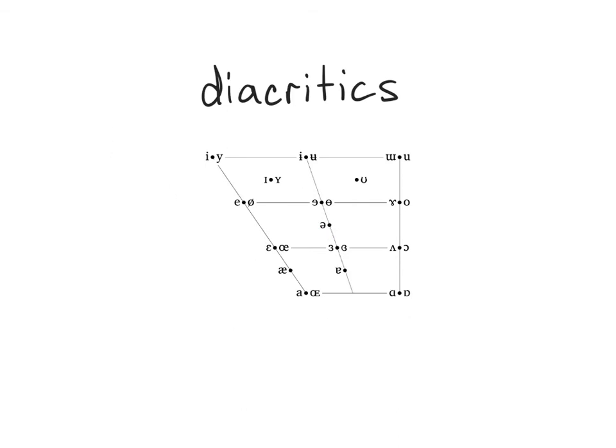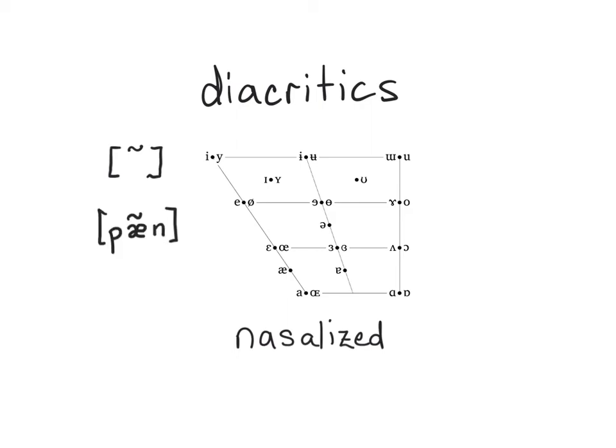Like nasal stops, vowels can also have a lowered velum, allowing air to flow through the nasal cavity, creating a nasalized vowel. This is represented in the IPA by a tilde diacritic over the vowel's base symbol. We've seen this diacritic before for the nasalized vowels in English that occur before nasal stops, as in 'pan'.